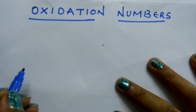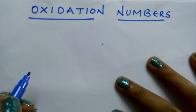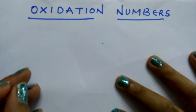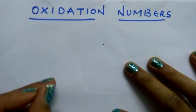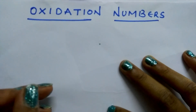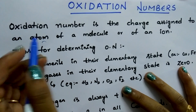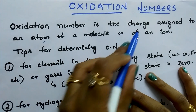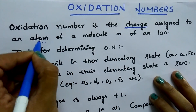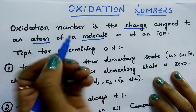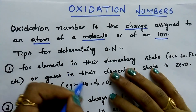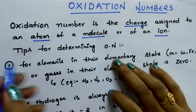Hi students, today I am going to explain the tips to find the oxidation numbers. These tips are very useful. By using these tips, you can find the oxidation number of an atom in a molecule. Oxidation number is the charge that is assigned to an atom in a molecule or an ion. These are the tips which are useful to find the oxidation number.